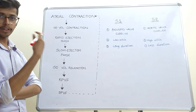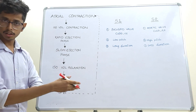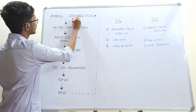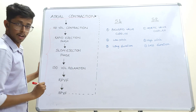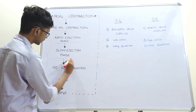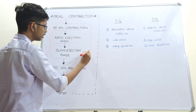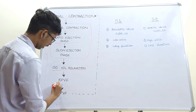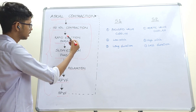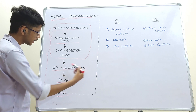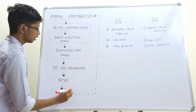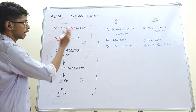Now we will see which phases fall under atrial systole, atrial diastole, ventricular systole, and ventricular diastole. Systole is the contraction phase; diastole is the relaxation phase. Atrial systole consists only of atrial contraction; all remaining phases are atrial diastole. Ventricular systole consists of isovolumetric contraction, rapid ejection phase, and slow ejection phase — 0.3 seconds total. Ventricular diastole consists of isovolumetric relaxation, RPVF, SPVF, and the atrial contraction phase — 0.5 seconds. The total cardiac cycle is 0.8 seconds.